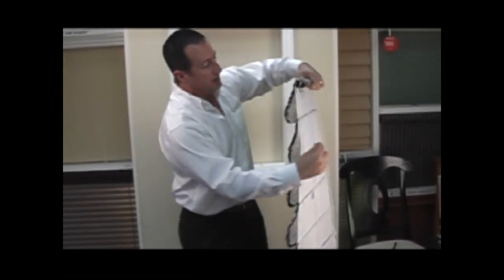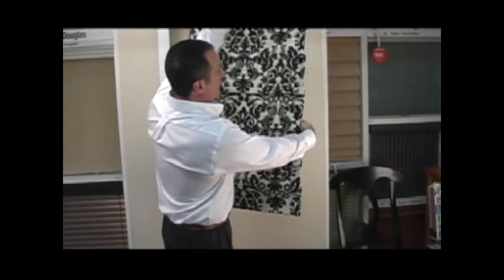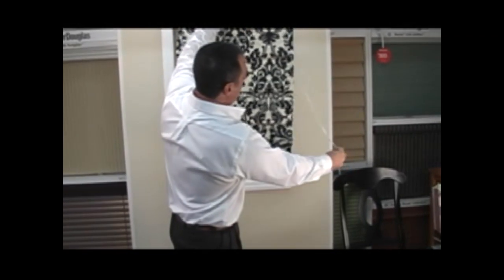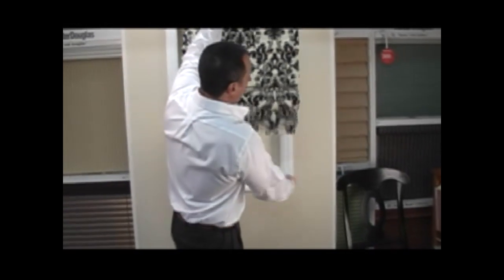Now our standard Roman Shade does have the cord behind the shade so that when you operate the shade you will reach behind the shade in order to lift and lower the shade.